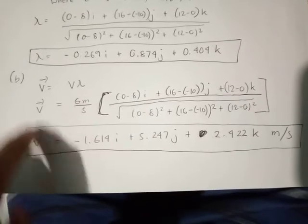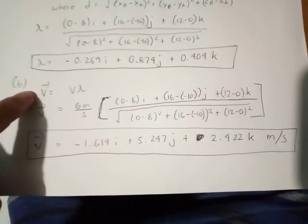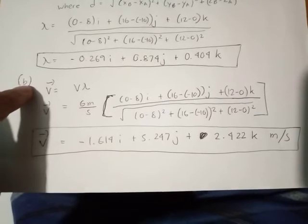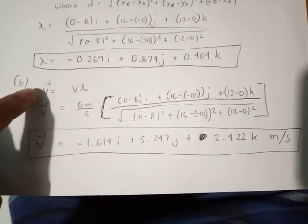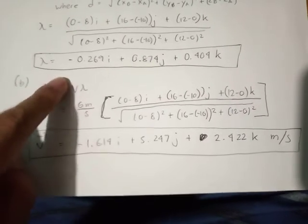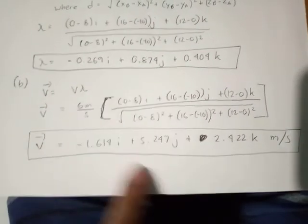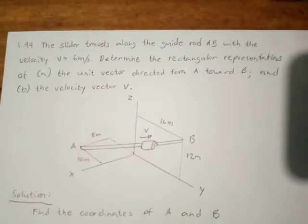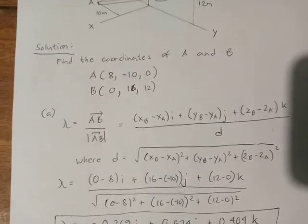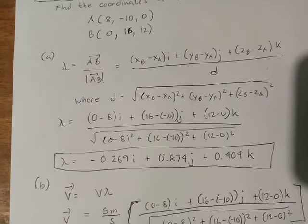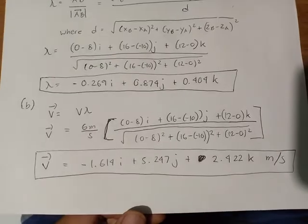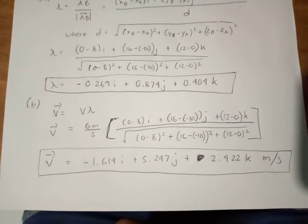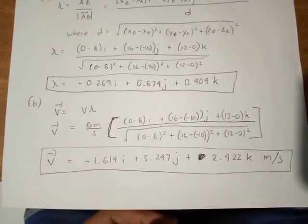Tandaan nyo yan. If you want to know the velocity, the vector form, so the vector form of any quantity is equivalent to the scalar form of any quantity multiplied by the unit vector. Dyan mo makukuha yung sagot. So sana naintindihan. Ito yung tanong natin, review lang natin. Yan yung solution din. So sana naintindihan. Since video ito, pwede nyo rin balikan yung mga portions sa video na hindi nyo masyadong naintindihan. Yan.